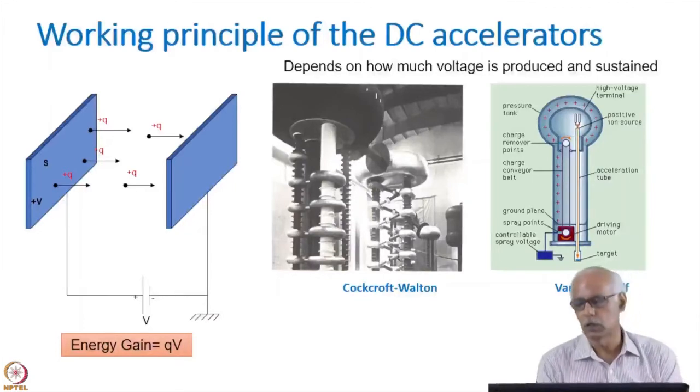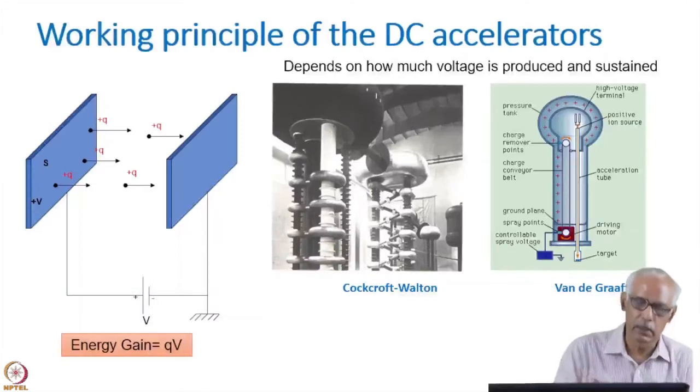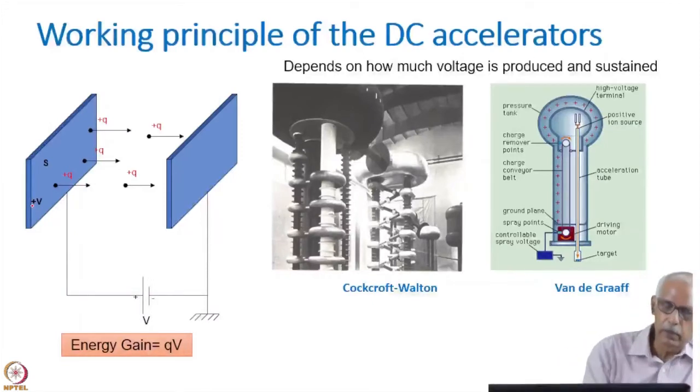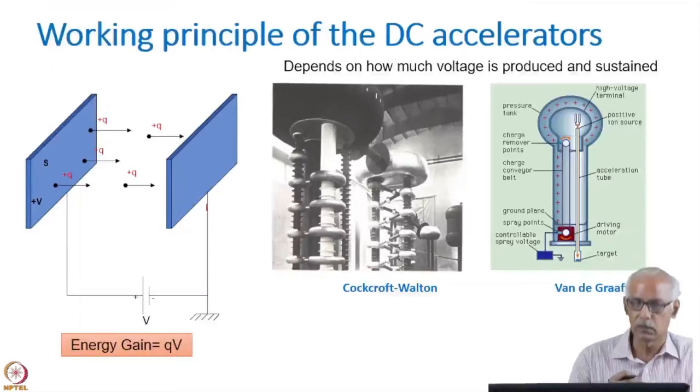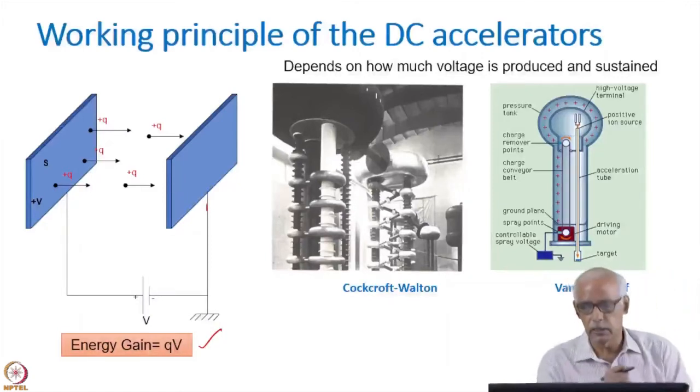In this category, let me just talk about how they are functioning or how their work principle is involved. Let me just explain how it is working. Suppose in the beginning I have explained that suppose there are two plates, and I connect a battery here, which is, this portion is positive and this is negative. That means this plate is negative and this is positive. And then you inject a positive ion which is having a charge of Q plus. Then these positive ions will be attracted by this second plate, which is at ground potential. When these particles reach to the second plate, the energy gain will be Q times voltage. So this is the basic principle of this.